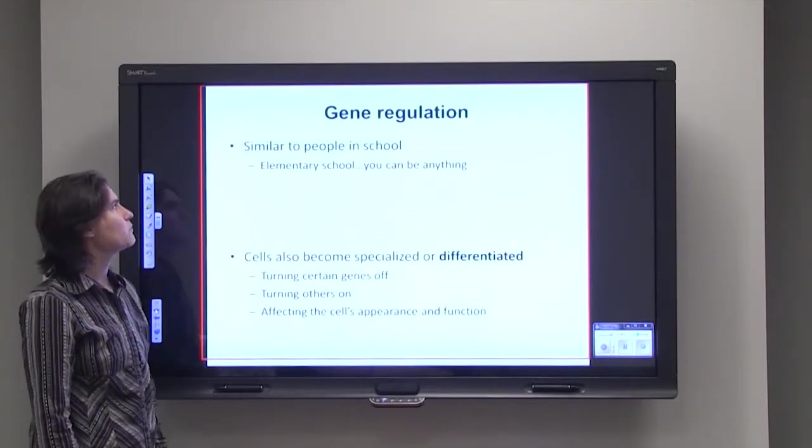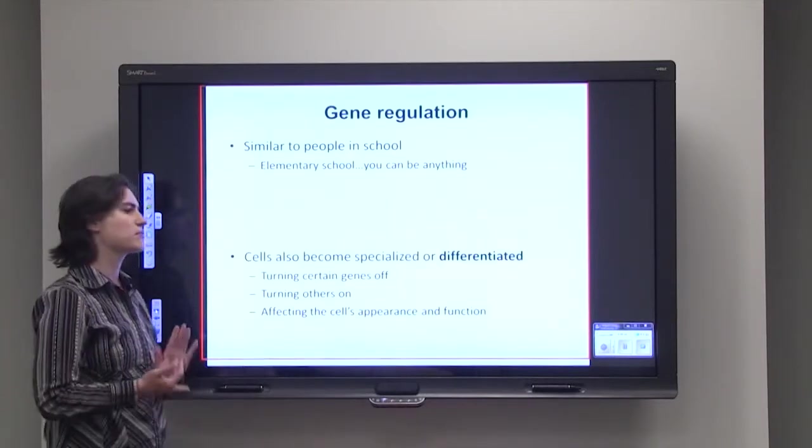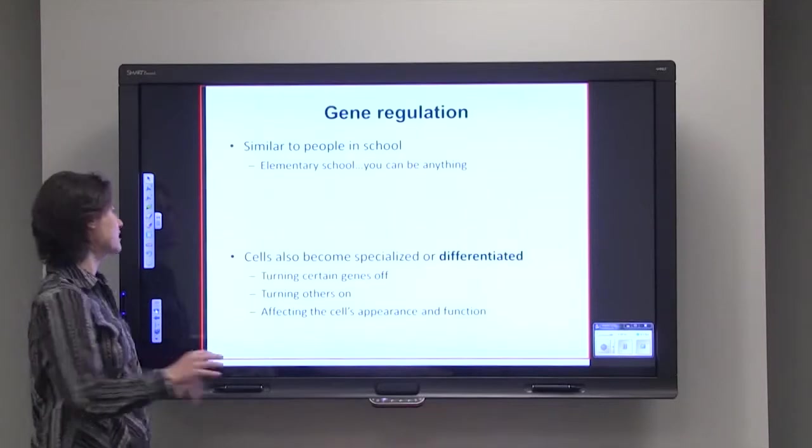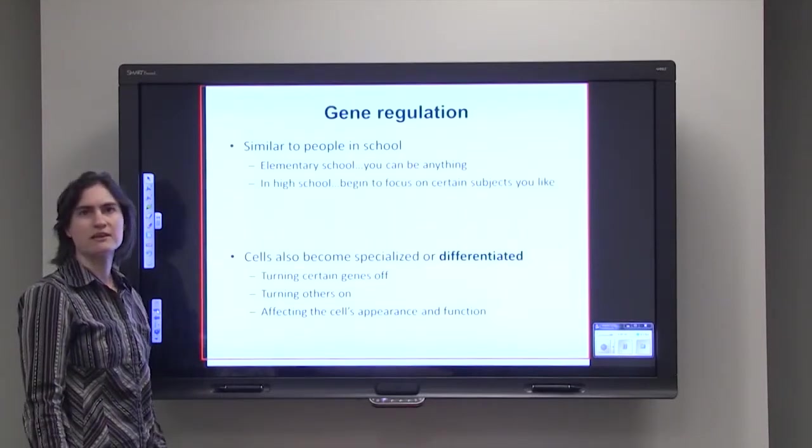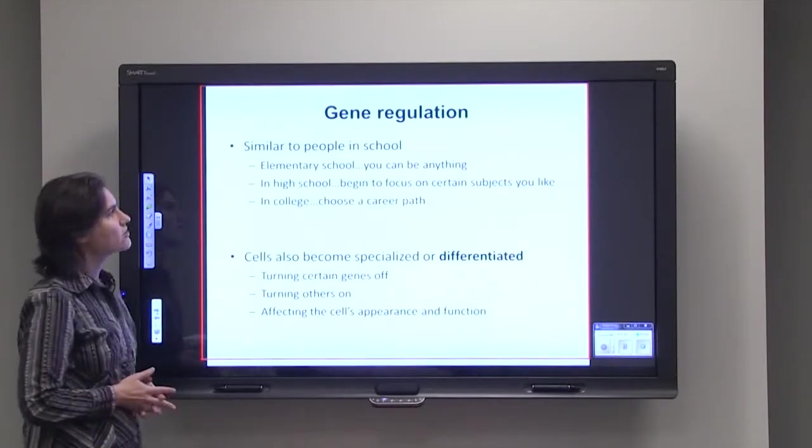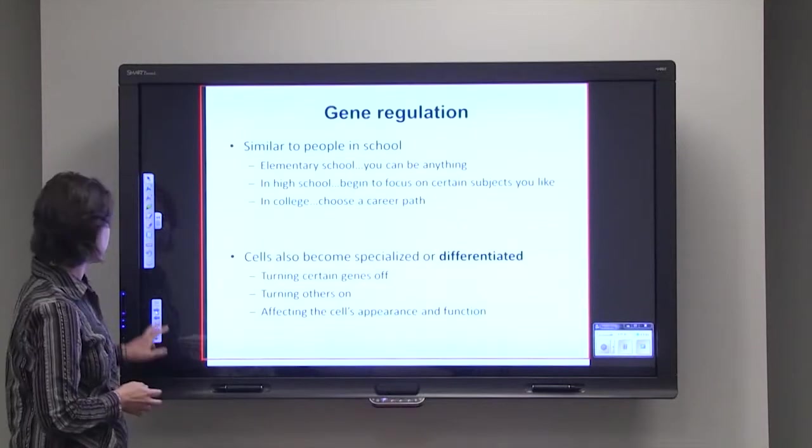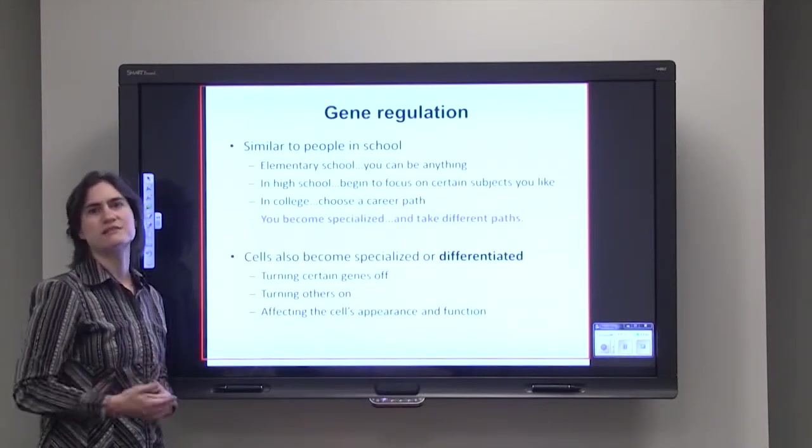Similar to people in school, when you start off in elementary school, you can be anything you want. Maybe a policeman, lawyer, doctor, anything. And then in high school, you begin to focus on certain subjects that you like, kind of narrowing down the fields that you're interested in. And then in college, you choose a specific career path. So you become very specialized when you take these different paths.